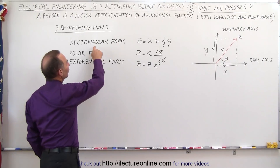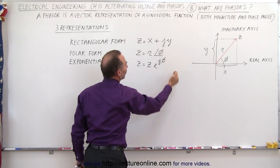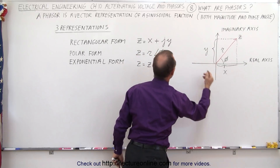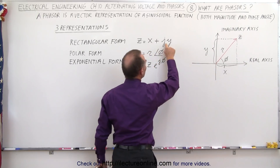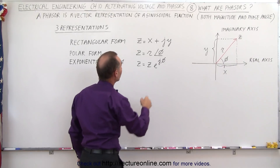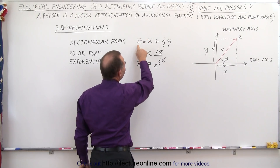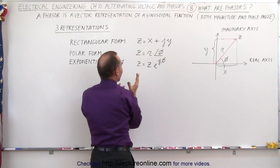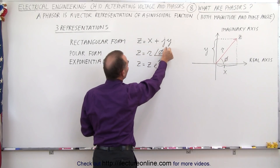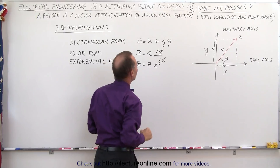The rectangular form has an x and a y component. Since the y component is in the imaginary axis direction, we have to use j, which is the square root of negative one. So the vector z has an x and a y component, giving us z equals x plus j times y.